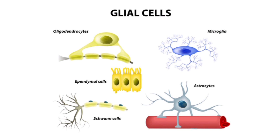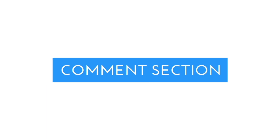To summarize, the different types of glial cells discussed are: the astrocytes, the microglia, the oligodendrocytes, the Schwann cells, and the ependymal cells. If you have any queries, you can ask in the comment section and I would love to answer those. Thank you for watching.